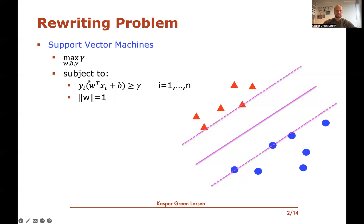The function margin was defined as taking the label and multiplying it with basically the prediction you would make on the feature vector — w inner product with xi plus b — and you want this product to be at least gamma. You force the norm of w to be 1 so that the function and geometric margin are both equal. This is the formulation from the previous video, saying we're looking for the hyperplane with the biggest margin to the closest point.